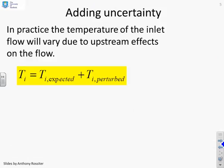So what we're going to do here is focus on adding uncertainty. In practice, the temperature of the inlet flow will vary due to upstream effects that you can't necessarily control. The actual inlet flow temperature T_i will not be what you expect. So I've put T_i expected. It will be something different because there's a small perturbation which here I've called T_i perturbed.